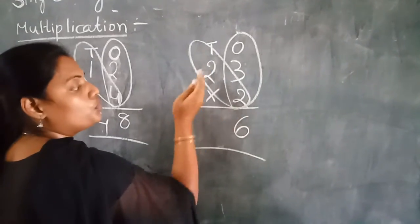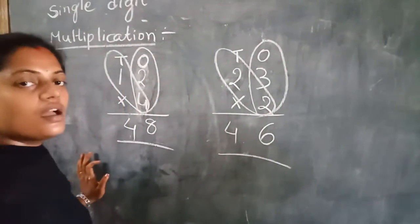Next, multiply with 10's place. 2 times 2 are 4. This is the answer.